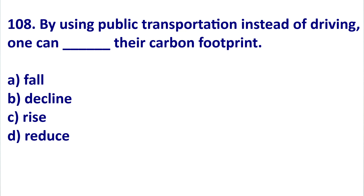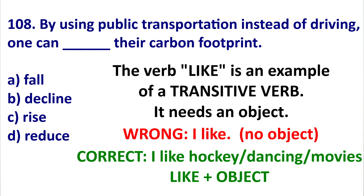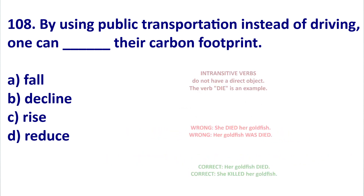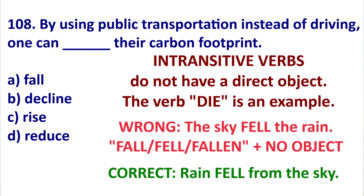Final question. To get this answer, it is all about grammar — specifically transitive verbs that need a direct object versus intransitive verbs that do not. For example, 'I like' is strange, but 'I like hockey, I like dancing, I like movies' is fine. So 'like' needs a direct object — it is a transitive verb. Intransitive verbs usually do not have a direct object. For example, 'she died her pet goldfish' is incorrect because 'die' cannot have an object. You could say 'her pet goldfish died' or 'she killed her pet goldfish.' Similarly, 'the sky fell the rain' is incorrect because 'fall, fell, fallen' cannot have a direct object.